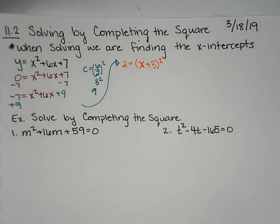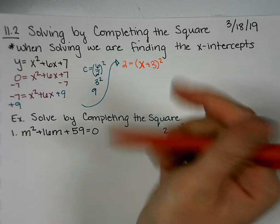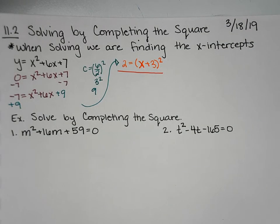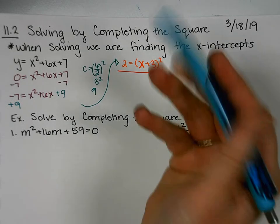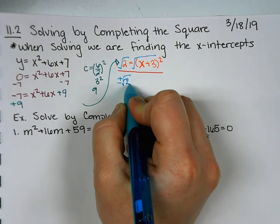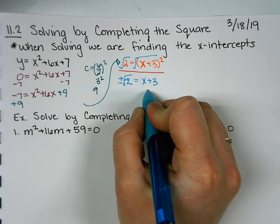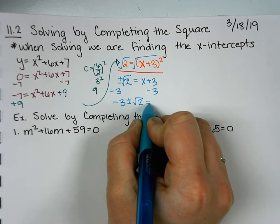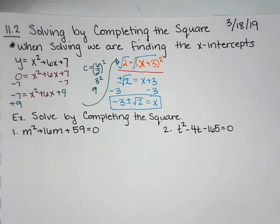So up to now, everything's been identical to what we did on Friday. But here's where it changes. If we were doing vertex form, we would still have a y in our equation that we would then move the constant over. But we don't have a y anymore. We're solving for x. So now we're going to solve by square roots. So to solve by square roots, we're going to square root both sides. So we have plus or minus square root 2 equals x plus 3. And then we subtract 3 to both sides. So negative 3 plus or minus the square root of 2 equals x. And you've just solved for x.